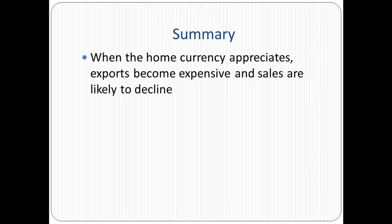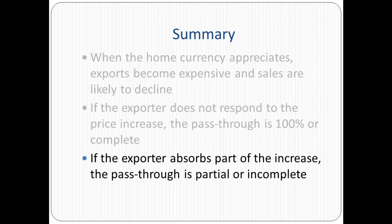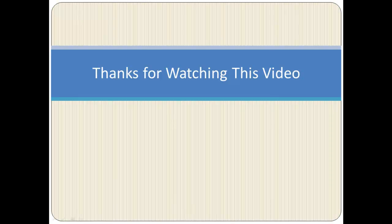In summary, when the home currency appreciates, exports become more expensive and sales are likely to decline. If the exporter does not respond to the price increase, the pass-through is 100% or complete. If the exporter absorbs part of the increase, the pass-through is partial or incomplete. Thank you for watching this video, I hope you found it useful.